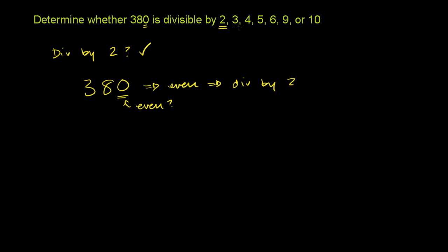Let's think about the situation for 3. Now a quick way to think about 3 is to add the digits of your number. And if the sum that you get is divisible by 3, then you are divisible by 3. So let's try to do that. So 380, let's add the digits. 3 plus 8 plus 0 is equal to 3 plus 8 is 11, plus 0 is just 11.